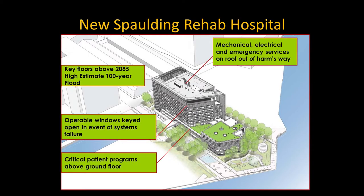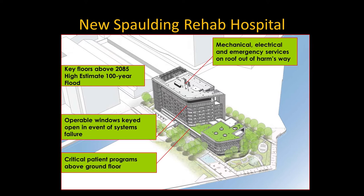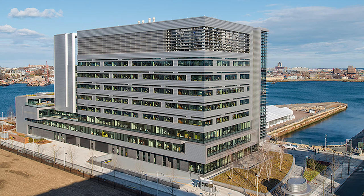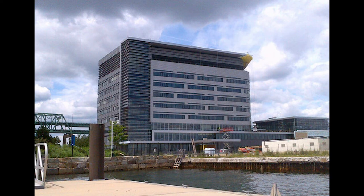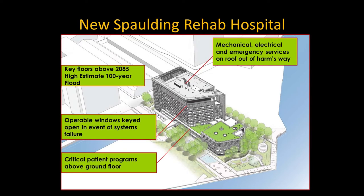The new Spaulding Rehabilitation Hospital in Charleston is a great example of these types of integrative adaptation strategies. When the hospital committed to building on the water in Charleston, they acknowledged the problem with sea level rise right up front during the planning process. Their engineers determined the 100-year flood elevation in the year 2085, and they located all of their key floors above this elevation. Every area below that is not critical — a flood can damage it and it wouldn't stop the primary mission of the hospital.